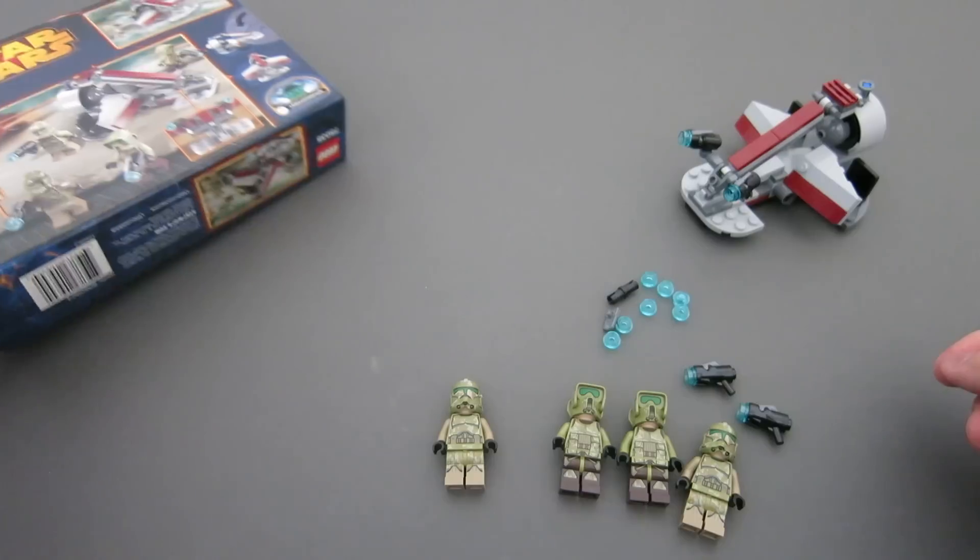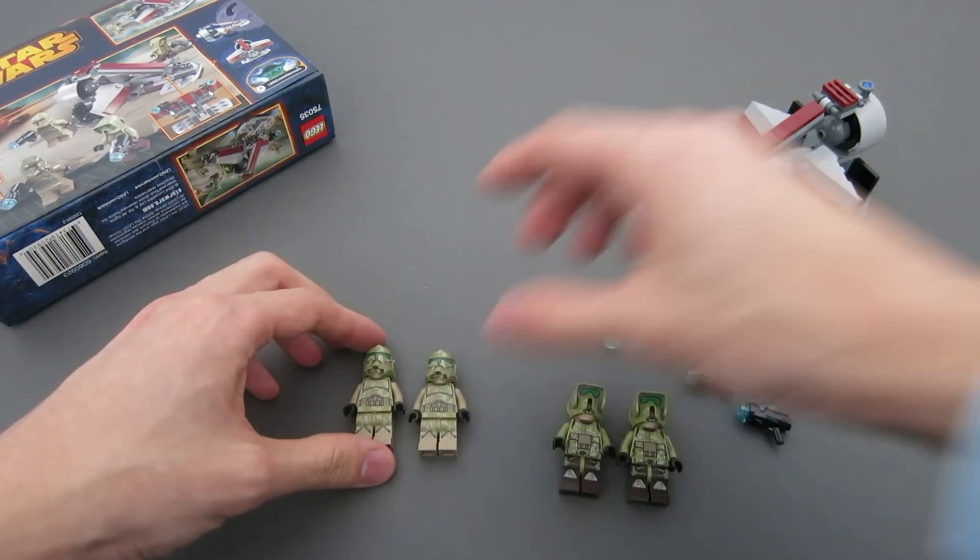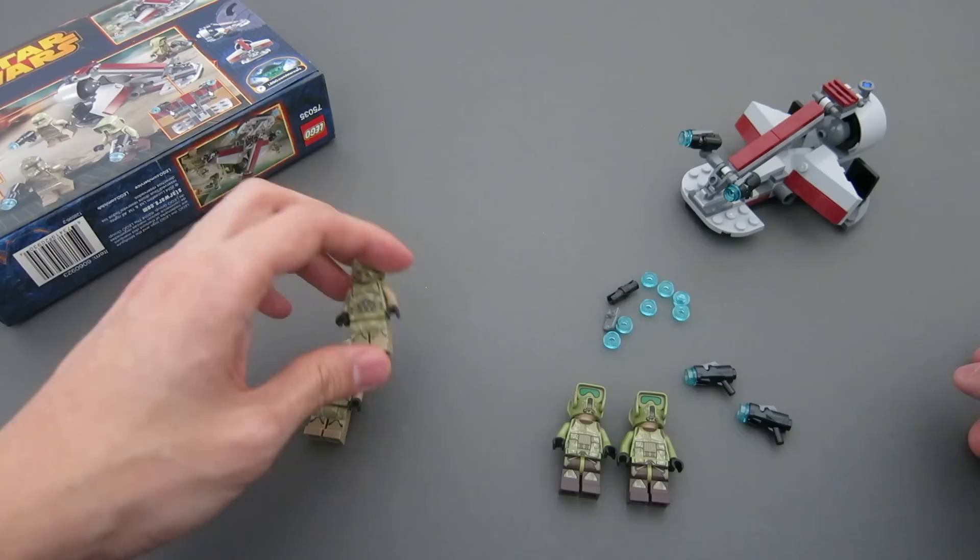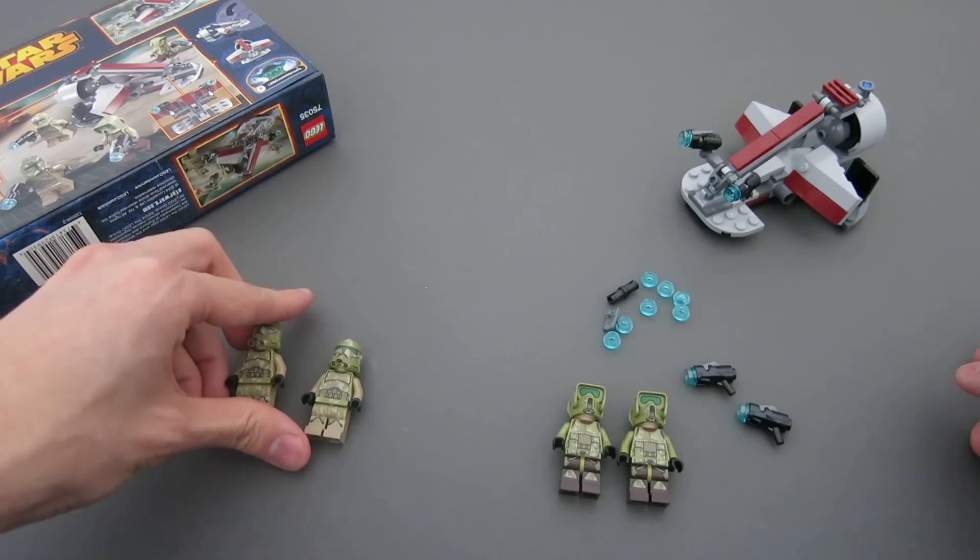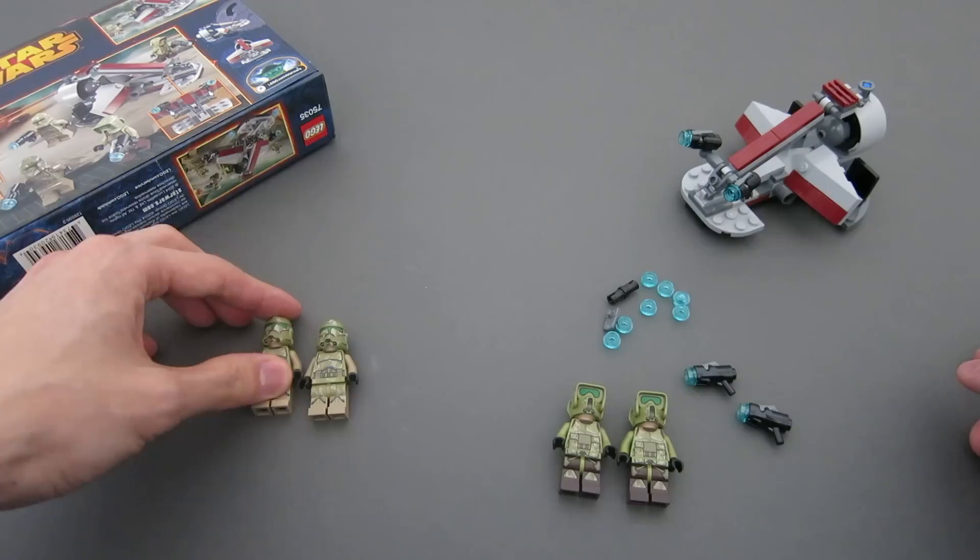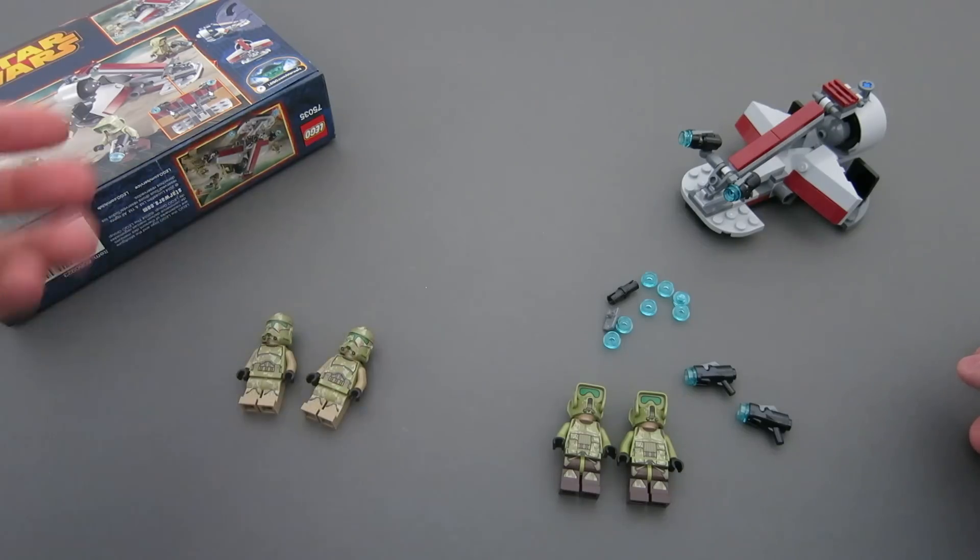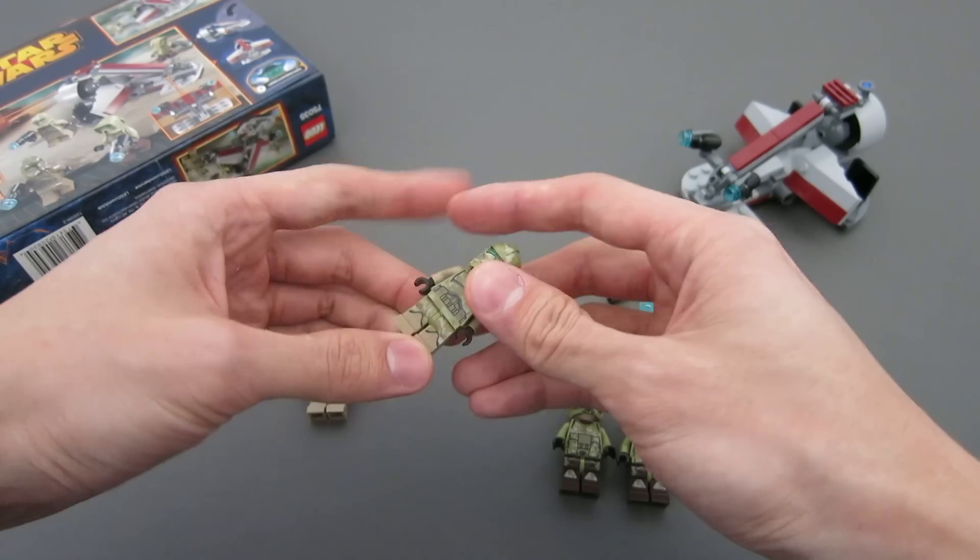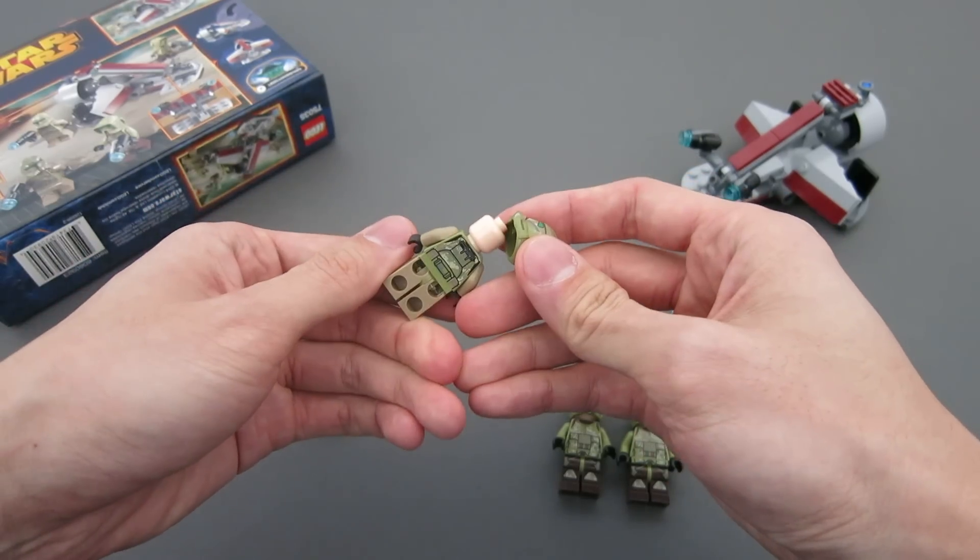So let's go ahead and take a look at the minifigs first. We have the two Kashyyyk Troopers. These are the new minifigures that feature olive green printing, contrary to the one that LEGO printed back in 2005, which has the sand green printing. I like the olive one much better and it blends in greatly, pretty well with the dark tan.